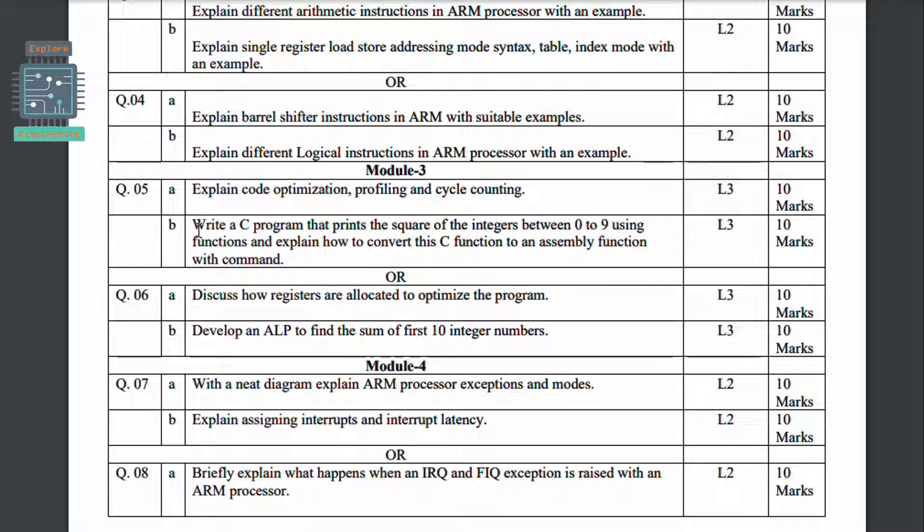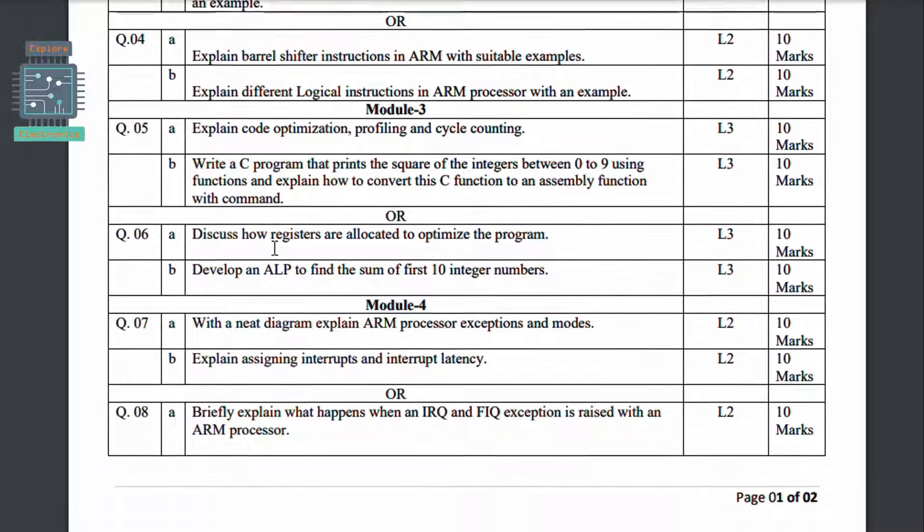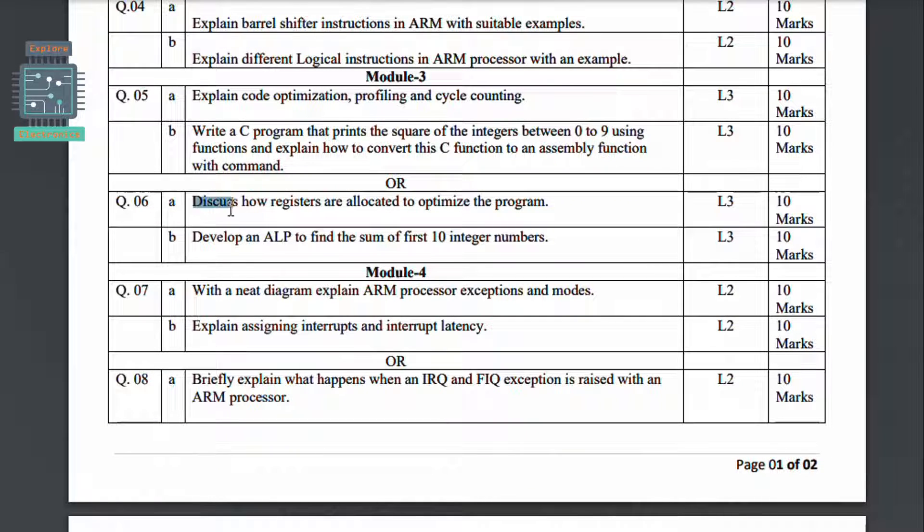Then the sixth question is discuss how registers are allocated to optimize the program for 10 marks. Develop an ALP to find the sum of first 10 integer numbers. Here we need to write the assembly language program to find the sum of first 10 integer numbers. This is also for 10 marks. So in Module 3 you can easily expect one programming question for sure.